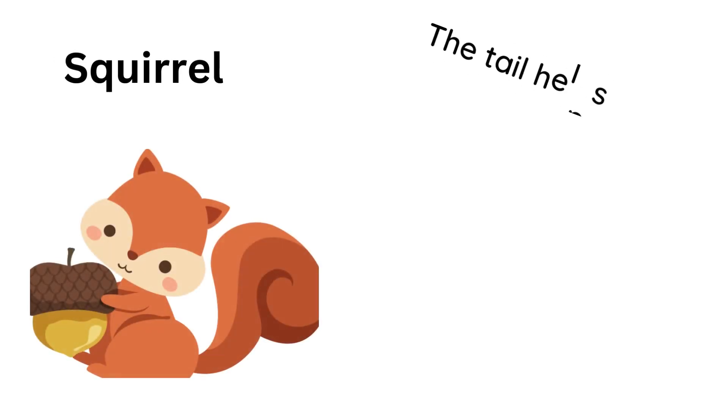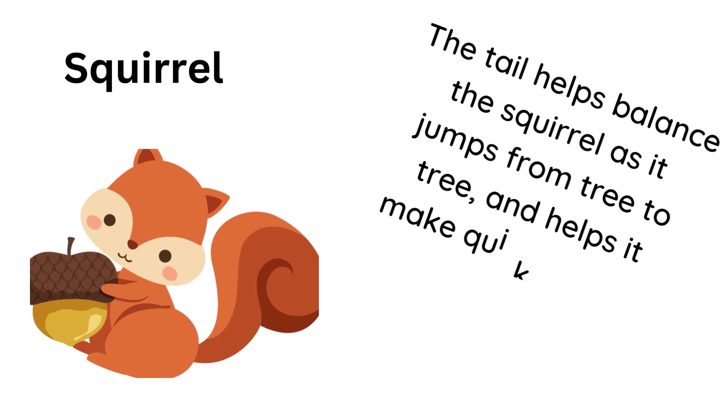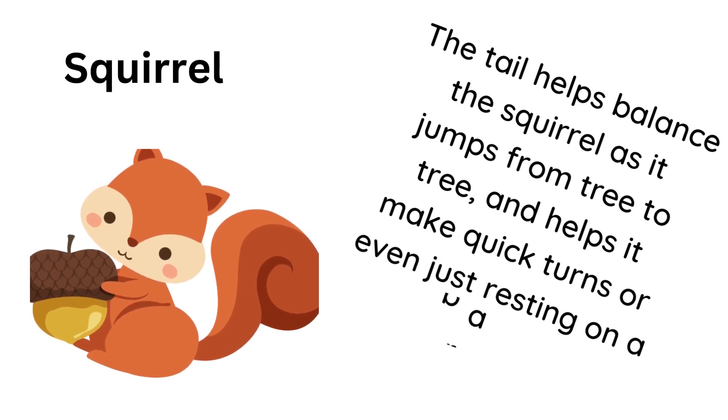The tail helps balance the squirrel as it jumps from tree to tree, and helps it make quick turns or even just resting on a branch.